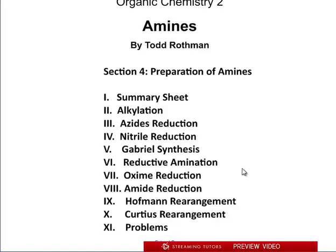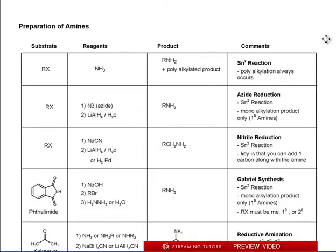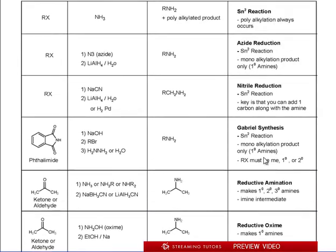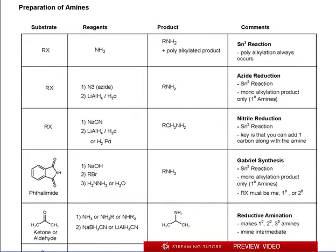This chapter is all about amines — how do you make them, how do you react them, what properties do they have, how do you separate them. Now what I'm going to show you first is this big summary sheet. I recommend that you print this out and keep it to the side as we go through the different reactions. It tells you everything you need to know in order to solve problems, but it doesn't give you the mechanisms or the finer details.